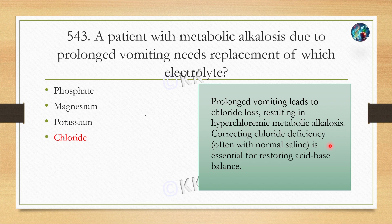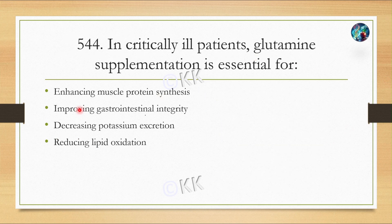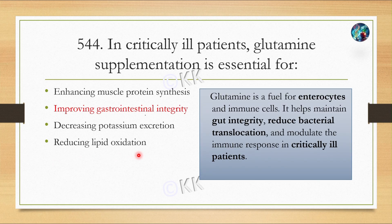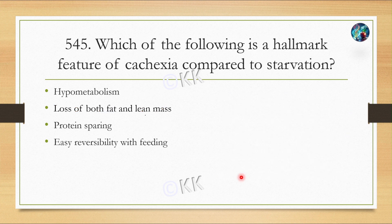Next question: in critically ill patients, glutamine supplementation is essential for: Option A: enhancing muscle protein synthesis. Option B: improving gastrointestinal integrity. Option C: decreasing potassium excretion. Option D: reducing lipid oxidation. The correct answer is Option B — improving gastrointestinal integrity. Glutamine is a fuel for enterocytes and immune cells; it helps maintain gut integrity, reduce bacterial translocation, and modulate the immune response in critically ill patients.